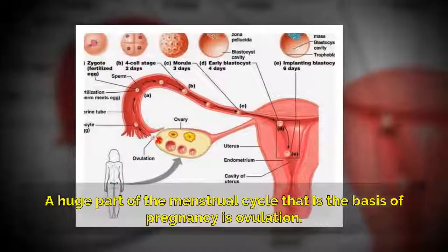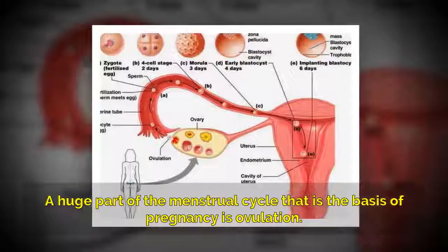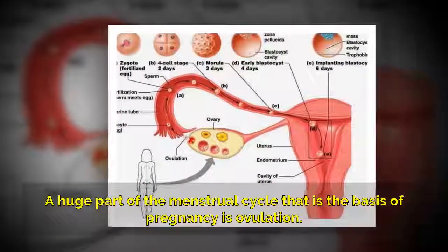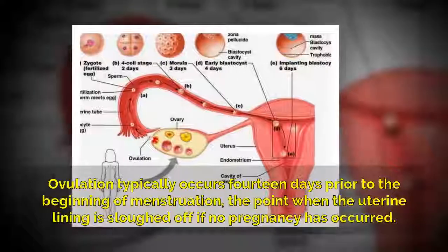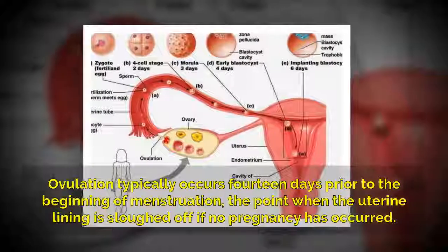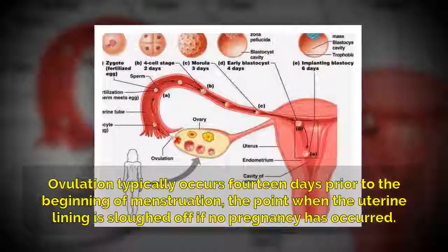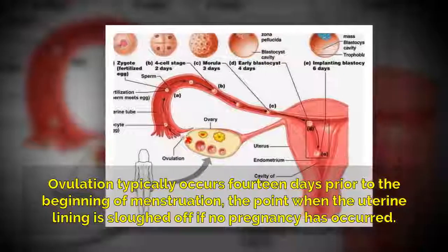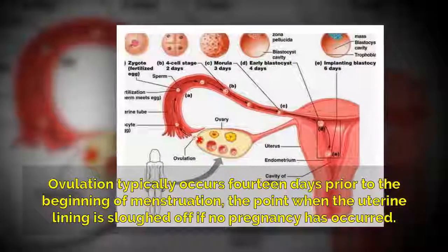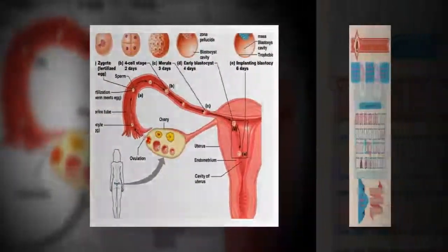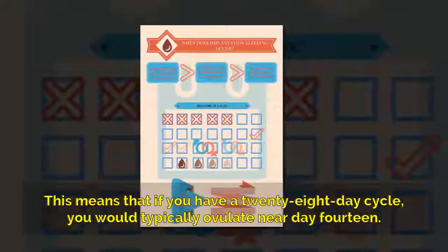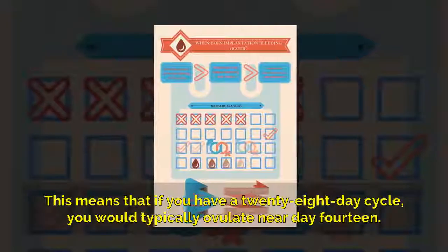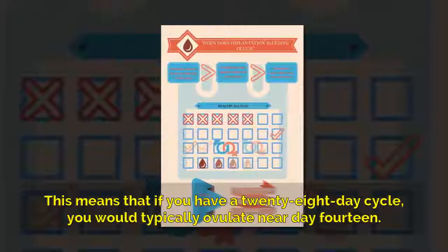A huge part of the menstrual cycle that is the basis of pregnancy is ovulation. Ovulation typically occurs 14 days prior to the beginning of menstruation — the point when the uterine lining is sloughed off if no pregnancy has occurred. This means that if you have a 28-day cycle, you would typically ovulate near day 14.